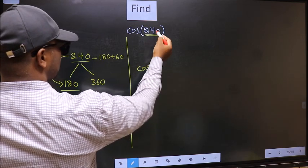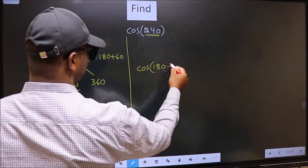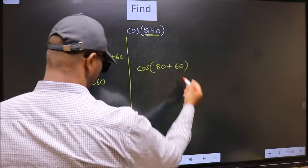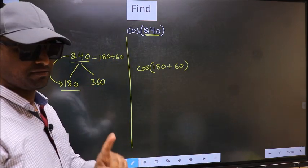In place of this, we write this: 180 plus 60. This is your step 1.